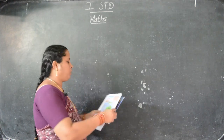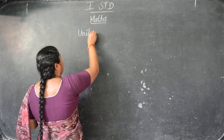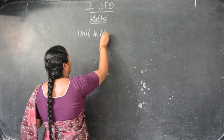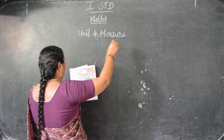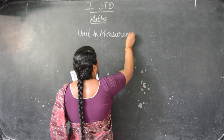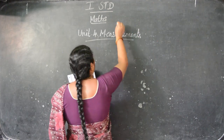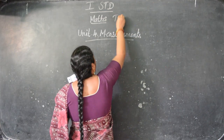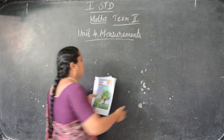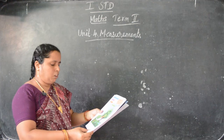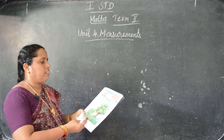Okay children, now we are going to start Unit 4, Measurement. Unit 4 Measurements. This is Term 2 portion. Take your math book, children. Page number 39, take. See here, this is Measurement - Comparison.